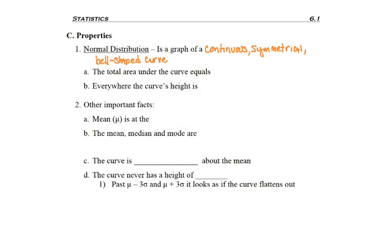And we already talked about this, but the total area under that curve is going to equal one or 100%. And everywhere the height is zero or some height above zero—obviously it can't be a height above one because the whole curve needs to total one.